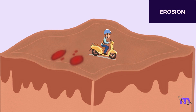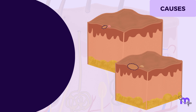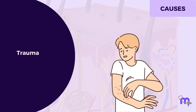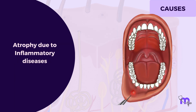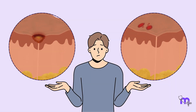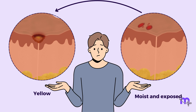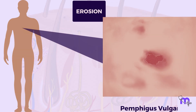Here we see erosions, which are red raw areas that appear on the skin or inside the mouth. They can be caused by broken vesicles or bullae, trauma, or atrophy due to inflammatory diseases. It is important to distinguish erosions from ulcers: ulcers are yellow while erosions are usually moist and exposed. However, erosions can sometimes turn into ulcers. Pemphigus vulgaris is an example of a condition that can cause erosions on both the skin and oral mucosa.